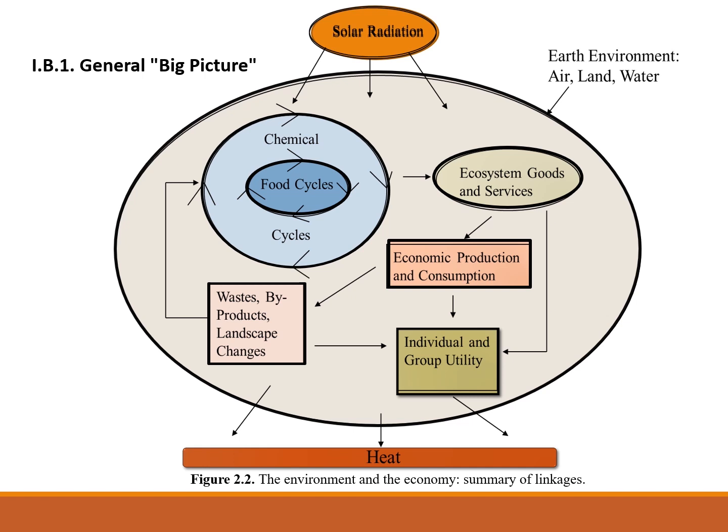Ecosystem goods and services may also impact individual and group utility directly. The ability of chemical and food cycles to continue providing ecosystem goods and services may be impacted by waste, byproducts, and landscape changes. Waste, byproducts, and landscape changes may also impact individual and group utility directly. The whole system is ultimately powered by the energy from the sun.